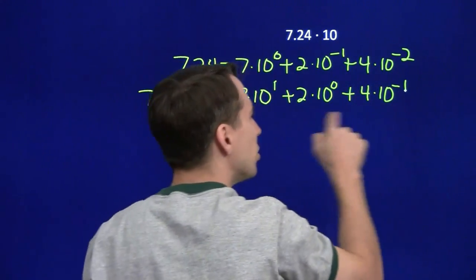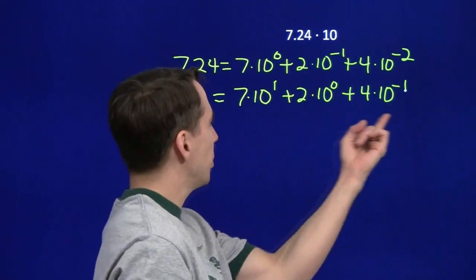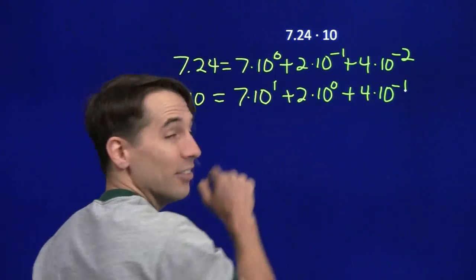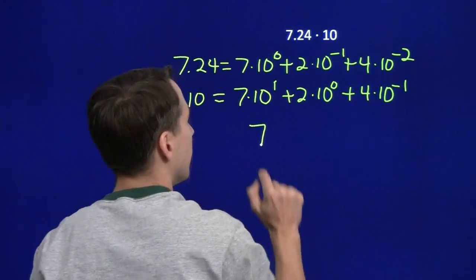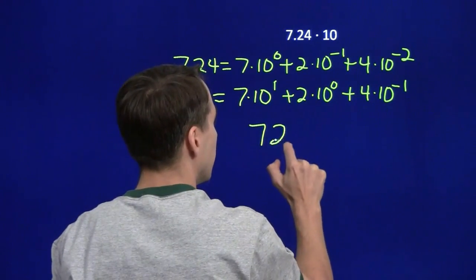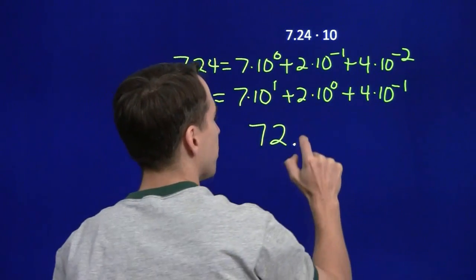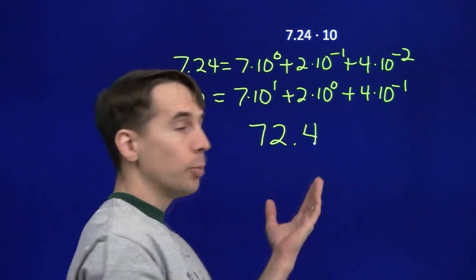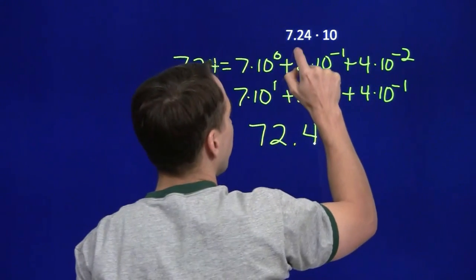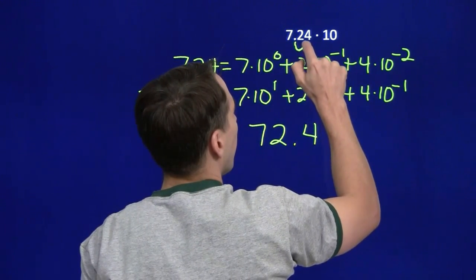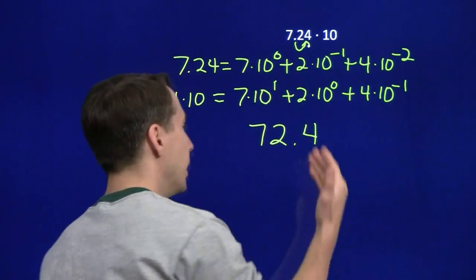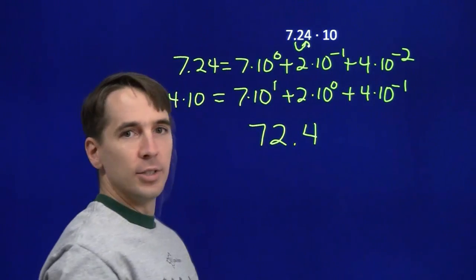Now we can easily just read off the decimal places of the result. We've got a 7 in the tens place, a 2 in the units place, and a 4 in the tenths place: 72.4. We can just read off the decimal places and see that multiplying by 10 moves the decimal point one place to the right, and we get 72.4.